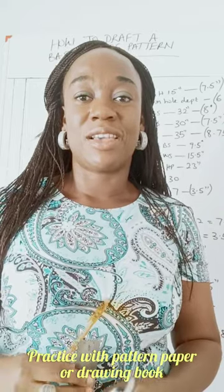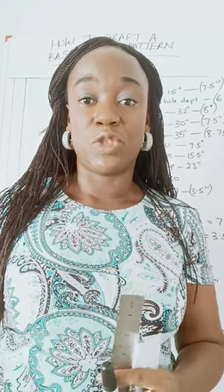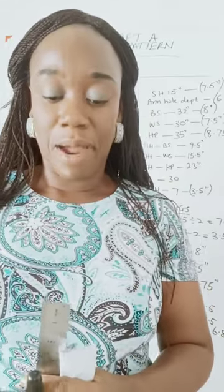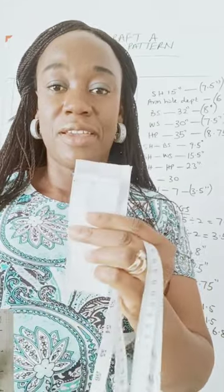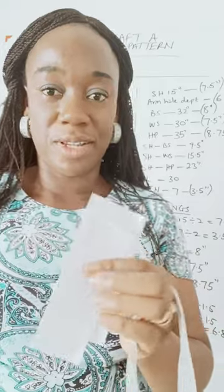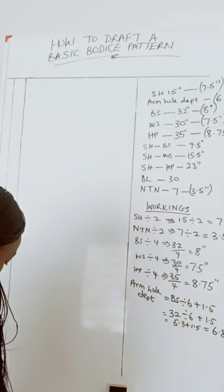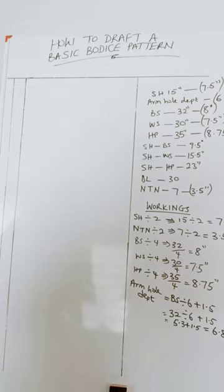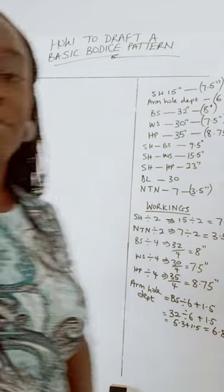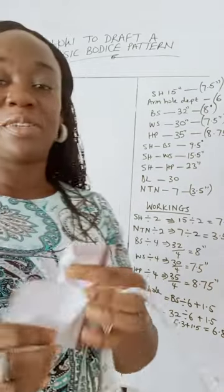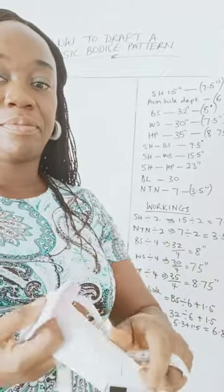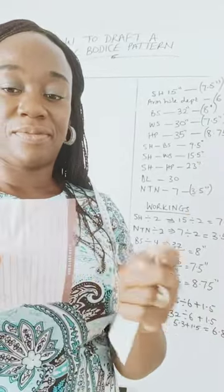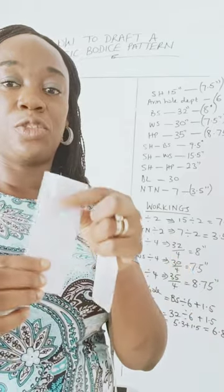Now remember that our fabric is to be folded into two parts for the front bodice and two parts for the back bodice. I'll be using this paper here as an illustration to show you that. So, assuming this is our fabric, you fold it into two.